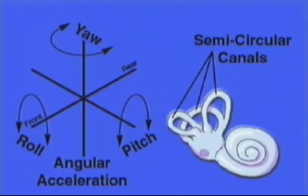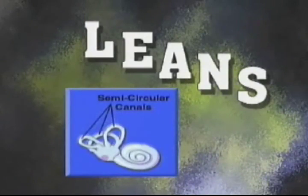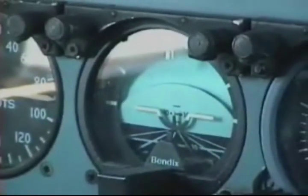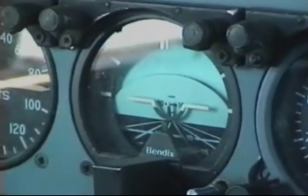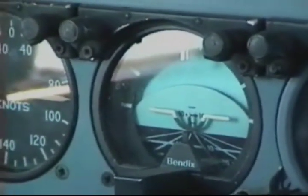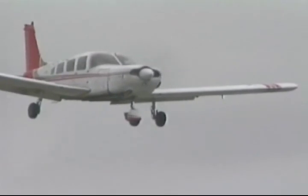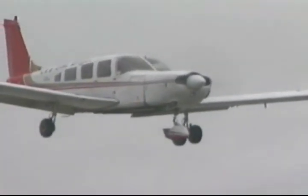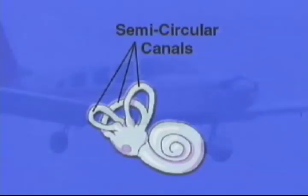Now let's examine some other in-flight illusions caused by the semicircular canals. The leans is the most common sensory illusion related to stimulation of the semicircular canals. It can be caused by two different circumstances while flying instruments without outside references. It is possible for you to be unaware of a gradual turn because human exposure to a rotational acceleration of 2 degrees per second squared or less is below the detection threshold of the semicircular canals.